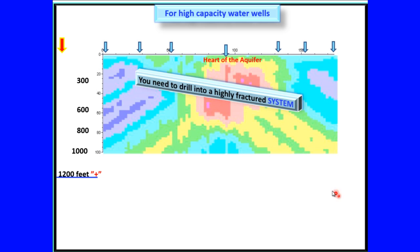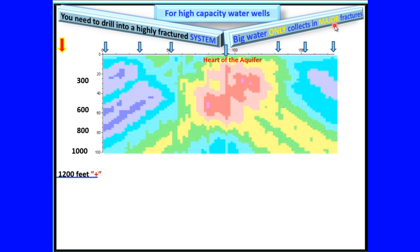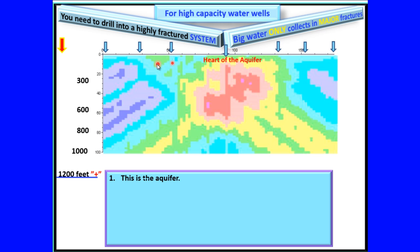For high-capacity water wells, you need to drill into highly fractured systems. Big water only collects in major fractures. This is the aquifer. This is the heart of the aquifer where water flows more freely due to major fracturing, highly fractured zones.